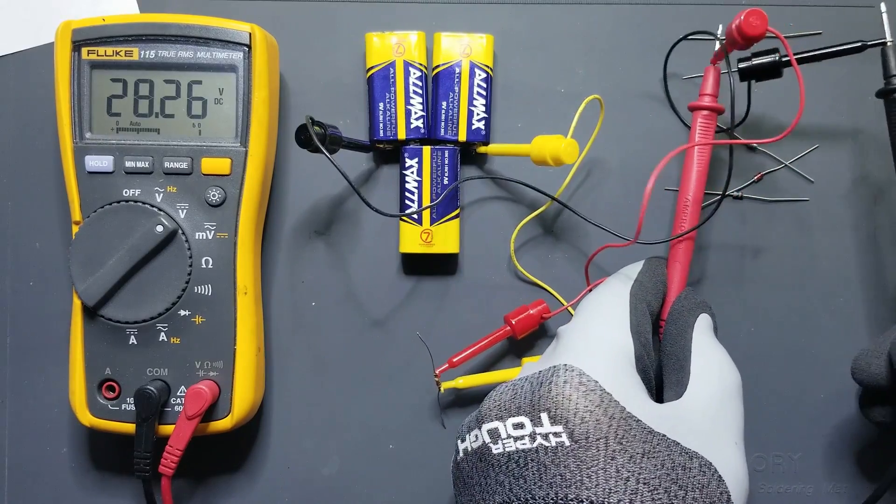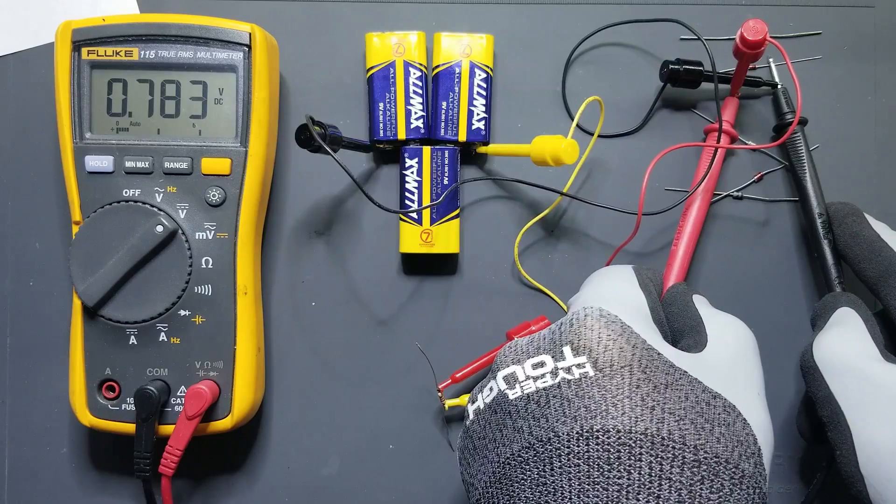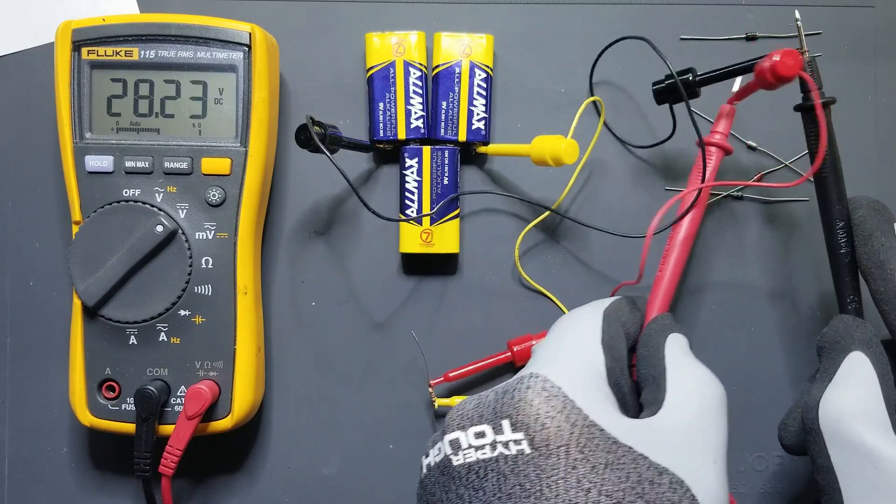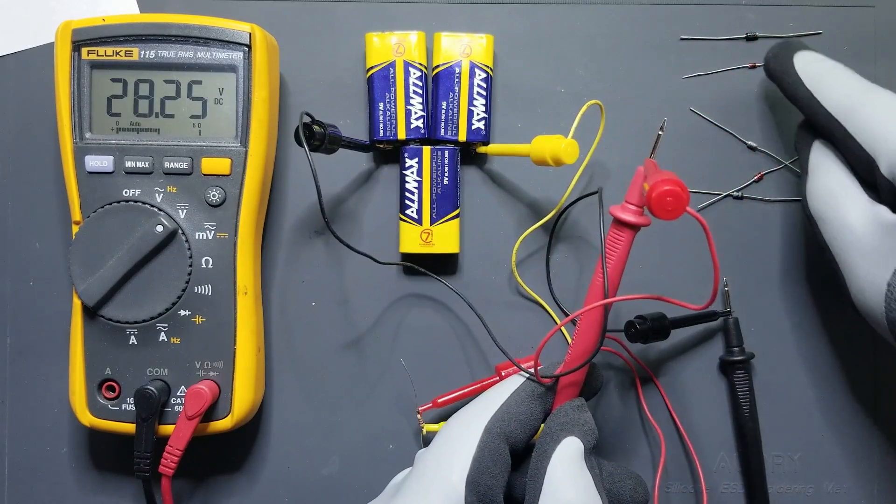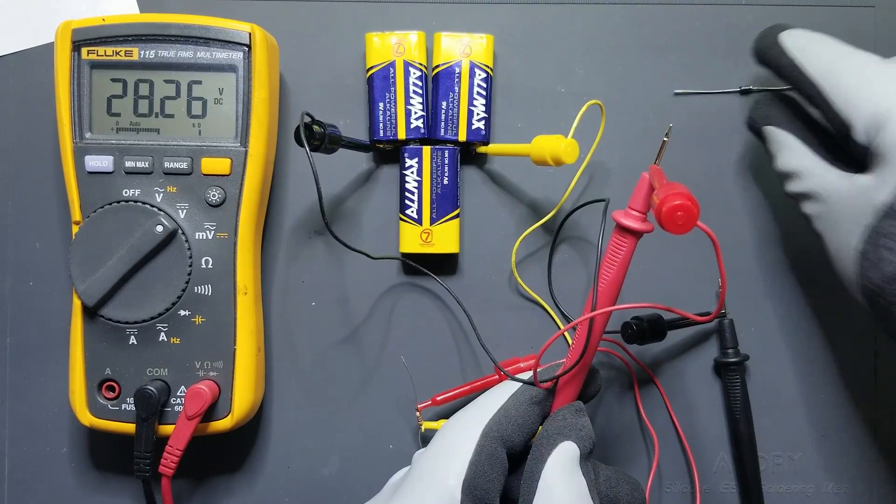It's going to act like a normal diode. Let's try to do this. That's giving me a reading that a normal diode would give us. But normally again, Zener diodes are not used in their forward bias condition. They are designed to be used in the reverse bias condition.